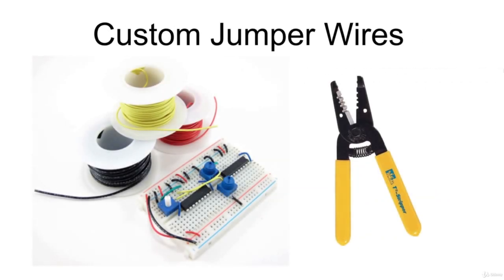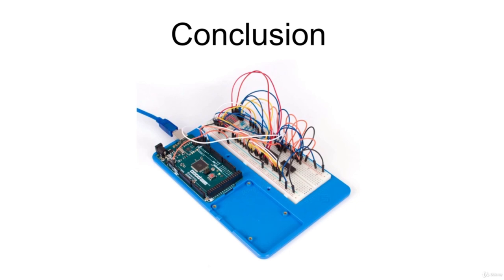You can also buy spools of wire and a pair of wire strippers and cut your own jumper wires. This is the best long-term option if you plan on doing a lot of electronic projects, because you can cut wires to the exact length you need and pick which colors you want. With this introduction to breadboards, you now know everything you need to build several Arduino projects using the most common tool for prototyping an electronic circuit.